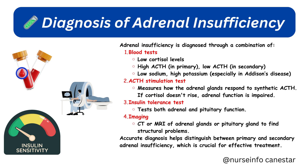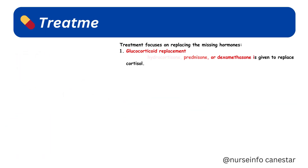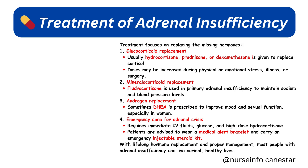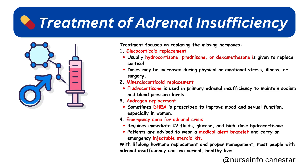Treatment focuses on replacing the missing hormones. First, glucocorticoid replacement — usually hydrocortisone, prednisone, or dexamethasone — is given to replace cortisol. Doses may be increased during physical or emotional stress, illness, or surgery. Second, mineralocorticoid replacement: fludrocortisone is used in primary adrenal insufficiency to maintain sodium and blood pressure levels.